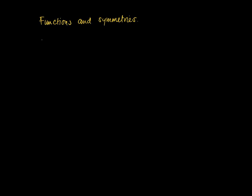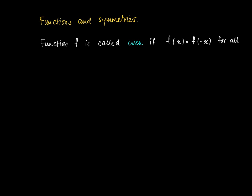In a former clip we studied functions and their graphs, and by looking at the graph we see a lot of symmetry popping up. A function f is called even if f(x) equals f(-x) for all x. This means that f should be defined on a symmetric interval around the origin, or the value x equals 0.